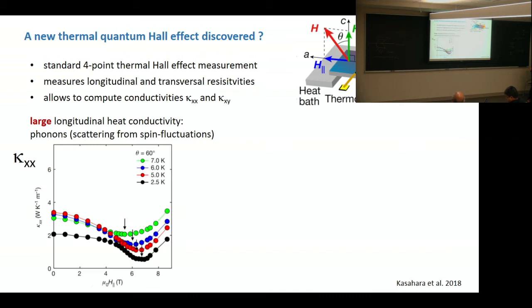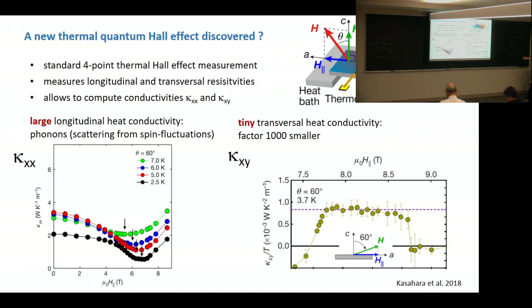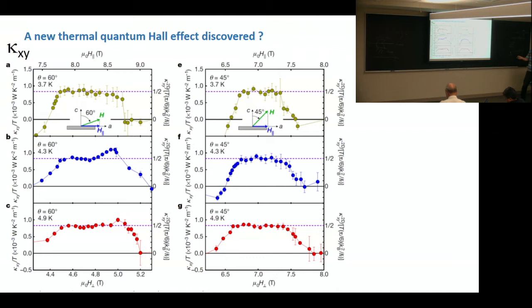And you observe what you expect. So this is an insulator. So the heat conductivity in parallel direction is given by phonons. But now in transverse direction, you measure now a tiny signal compared to the longitudinal heat conductivity. It's just a factor of thousands, it's smaller than this factor here. But when you start to see something like that, let's take a close look.